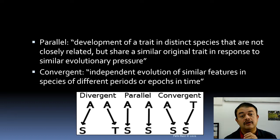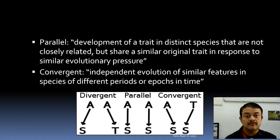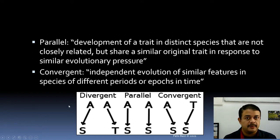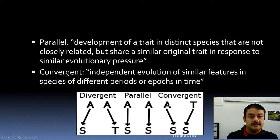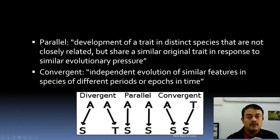Parallel evolution involves development of a trait in distinct species that share similar original traits and respond to similar evolutionary pressure — a somewhat hazy concept. Divergent and convergent are the clear ones. Convergent evolution means independent evolution of similar features in species of different lineages, which causes problems in phylogeny if homoplastic sequences are included. Divergent: A becomes S, A becomes T — species split. Parallel: related lineages both A become S. Convergent: completely unrelated — A becomes S, T became S.